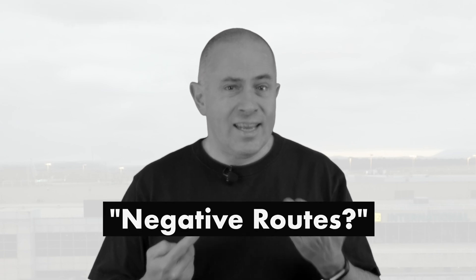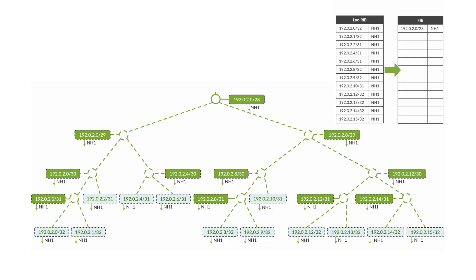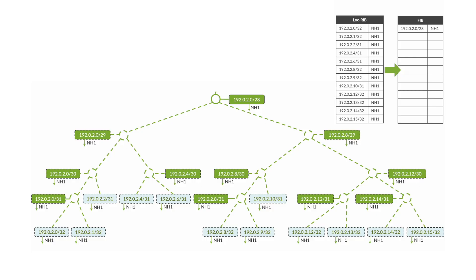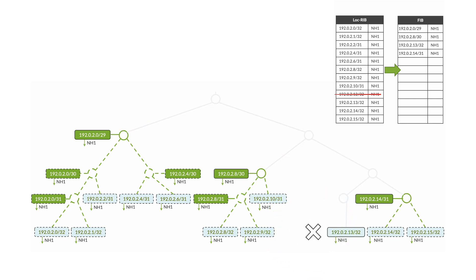I've been asked this question several times: if certain entries are missing to build an aggregate, can we create some negative routes to fill the gaps? The answer is no. If there is no contributor to create the aggregate, we don't invent a route pointing to 0.0.0.0. The algorithm keeps it simple. In this example, 192.0.2.12/32 is not present, and therefore the structure will be compressed into four entries, not just one.